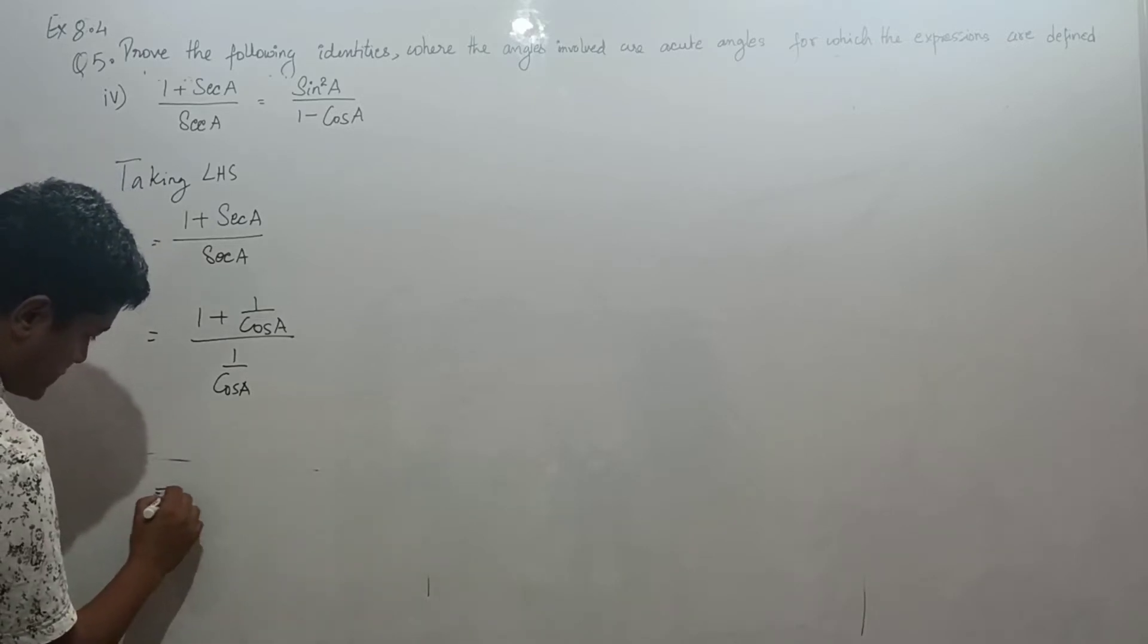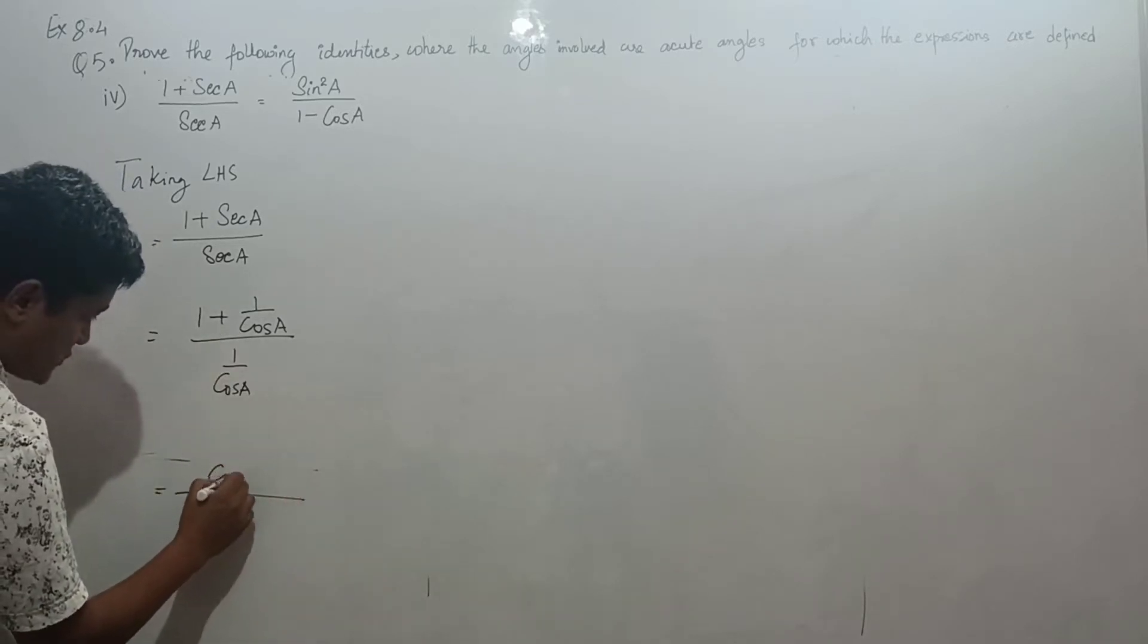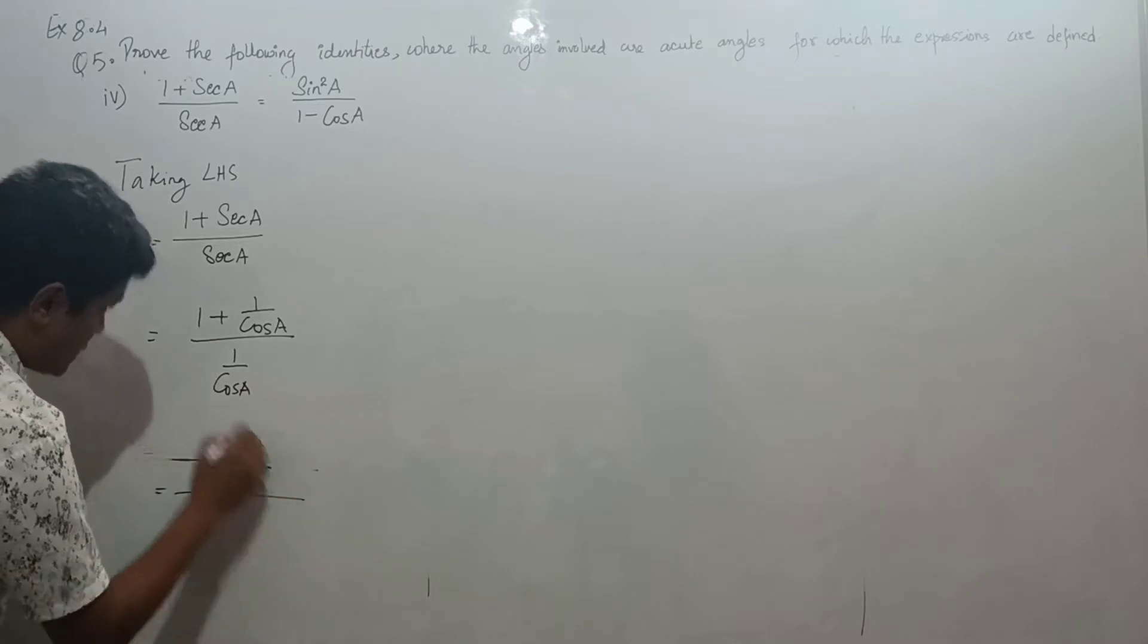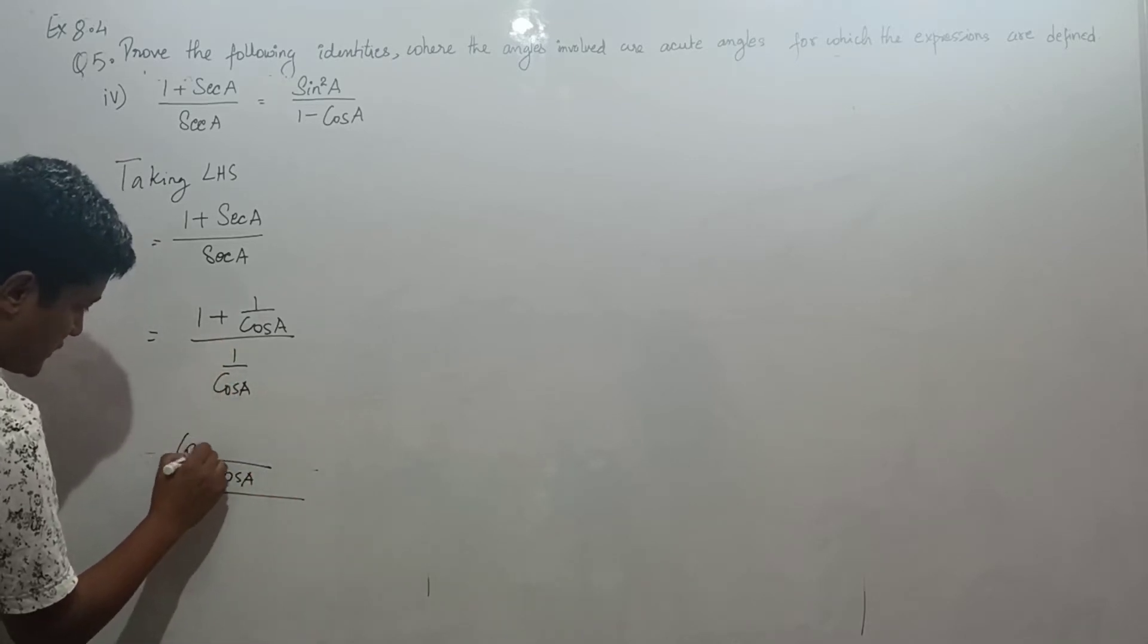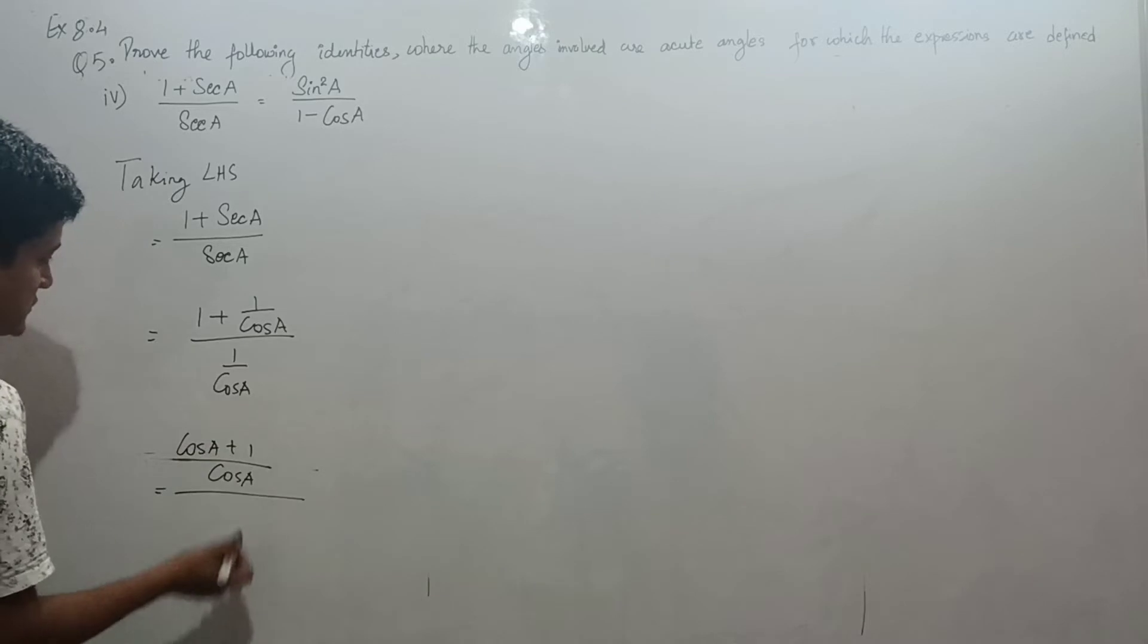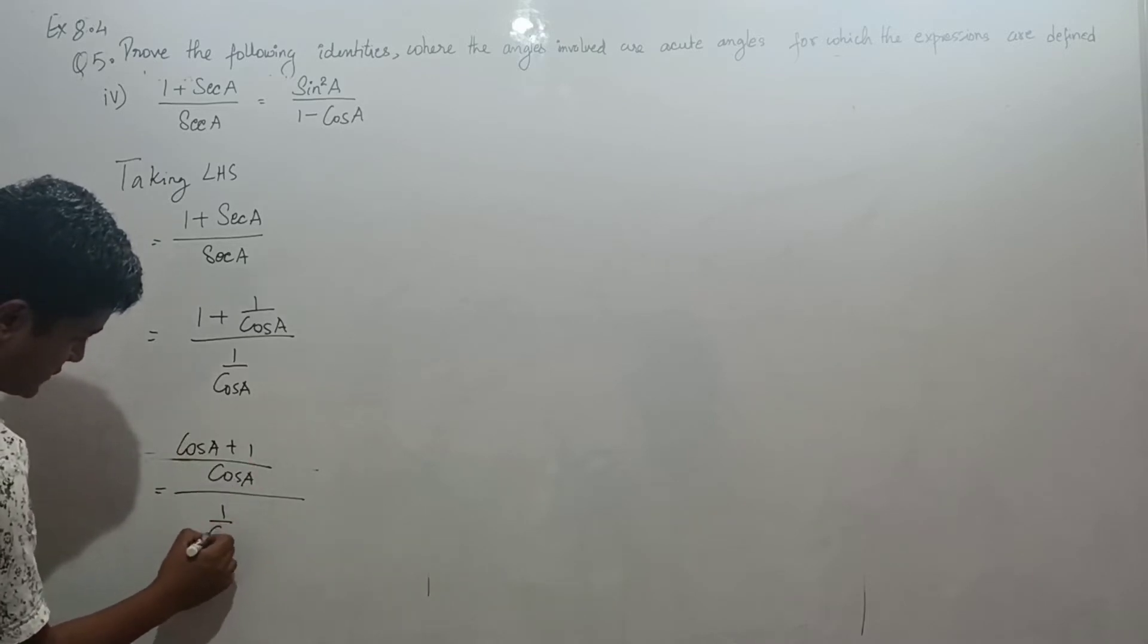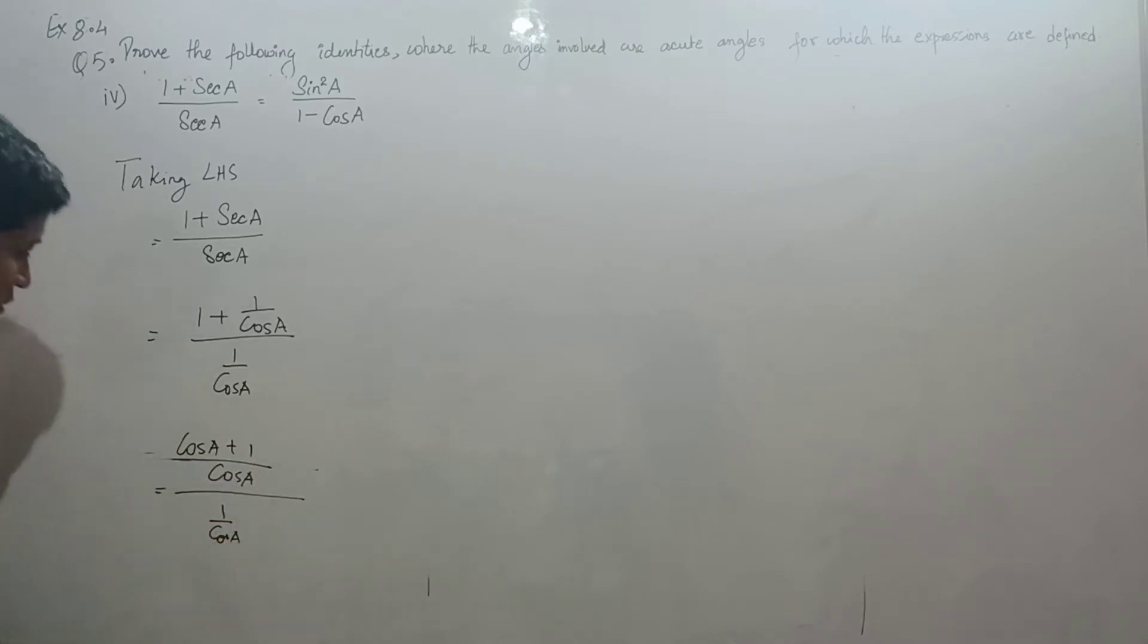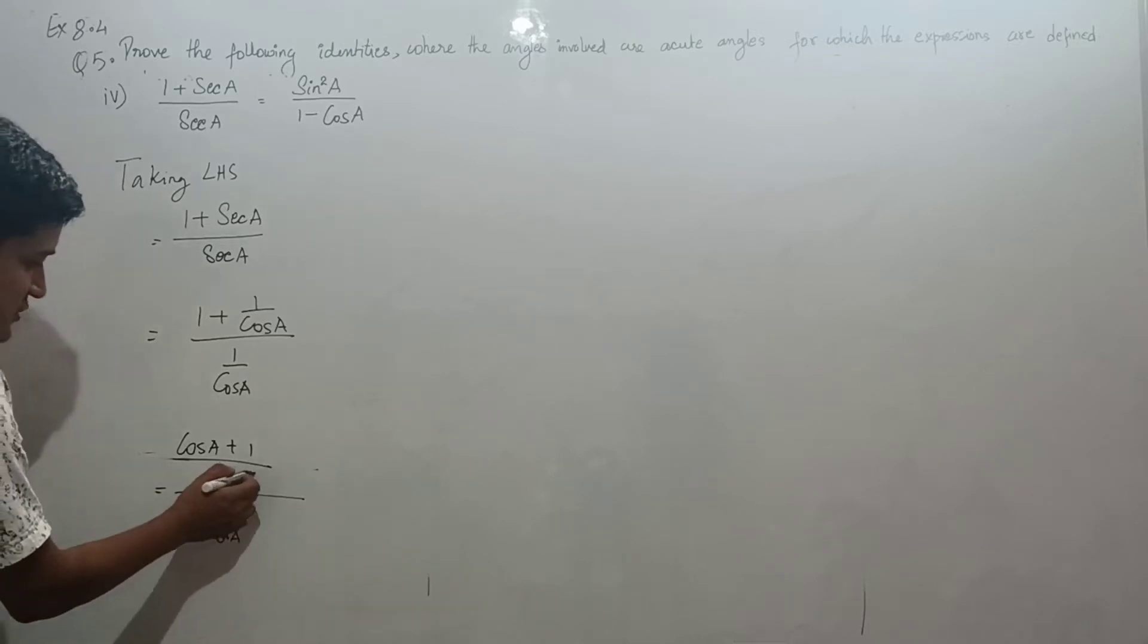Taking LCM of cos a, we get cos a plus 1 over 1 by cos a. In the numerator and denominator, cos a cancels. The answer comes to cos a plus 1 over cos a.